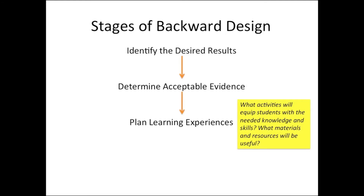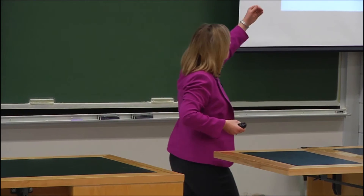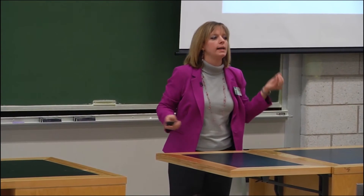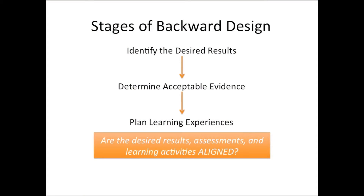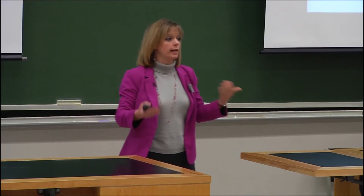Being able to do this in this order usually only happens in a perfect world, or if you get the opportunity to develop a course from scratch with enough time. Sometimes we have to take pieces and do them when we can, but always keeping in mind the alignment piece: are the outcomes, the desired results, the assessments, and the learning activities aligned? Because if you want students to do higher-order thinking and the activities in your class are clicker questions where they have to recall vocabulary, then you're not aligned.